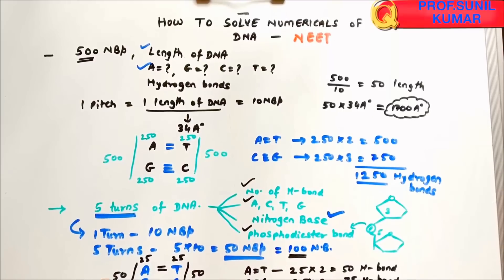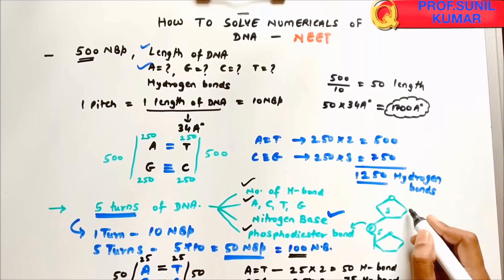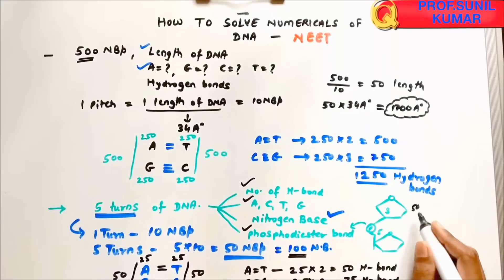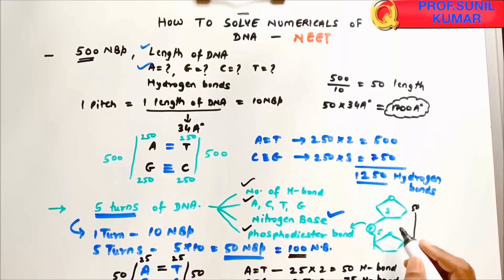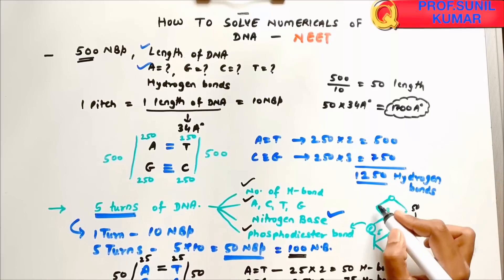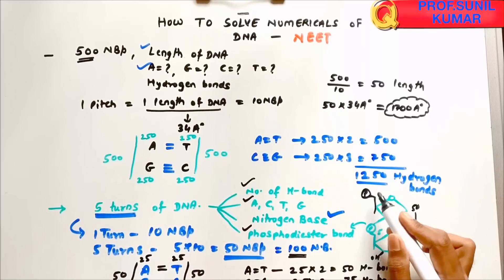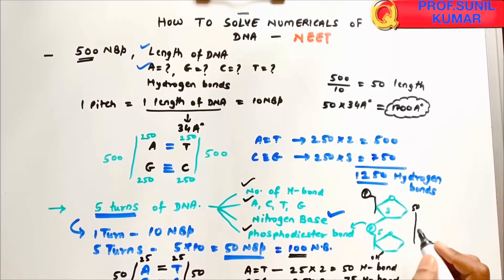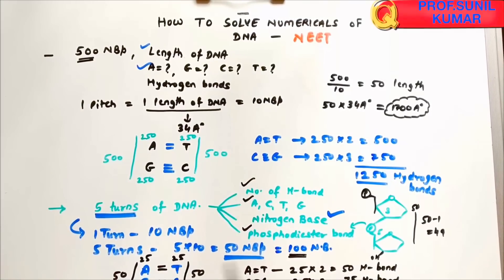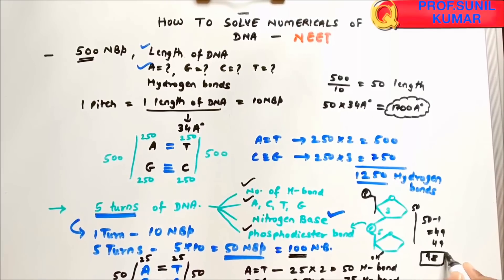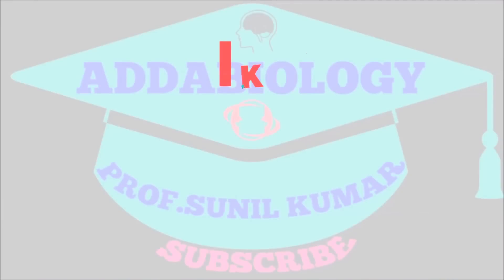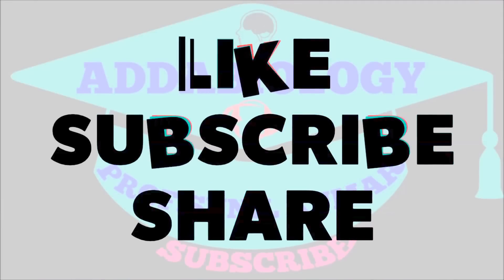For phosphodiester bonds: each strand has 50 sugars. The first sugar has a free phosphate and the last has a free OH, so phosphodiester bonds per strand = 50 − 1 = 49. For both strands: 49 × 2 = 98 phosphodiester bonds total. This is how you solve DNA numericals.